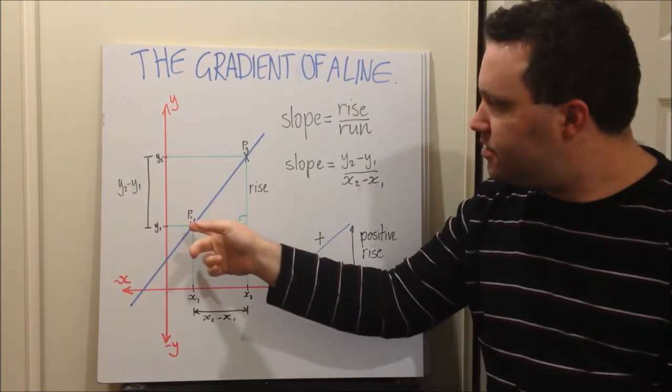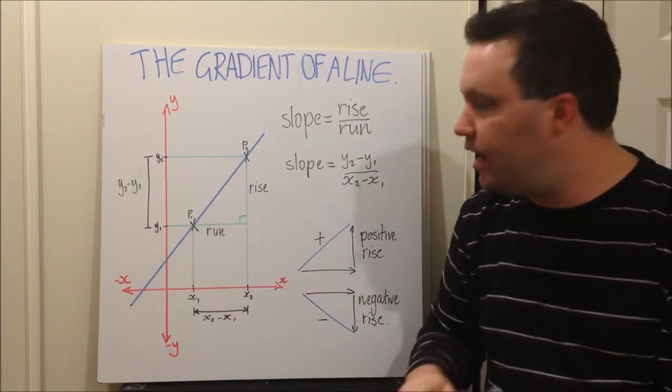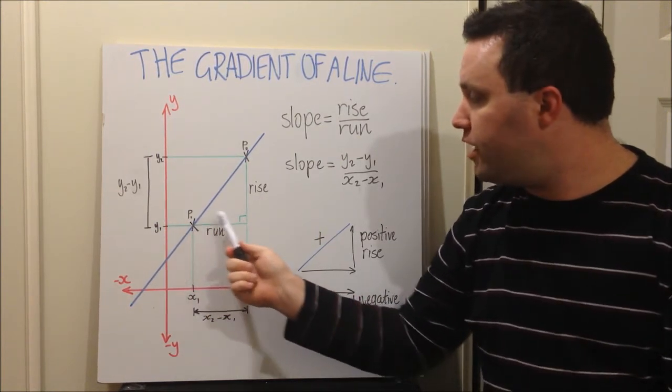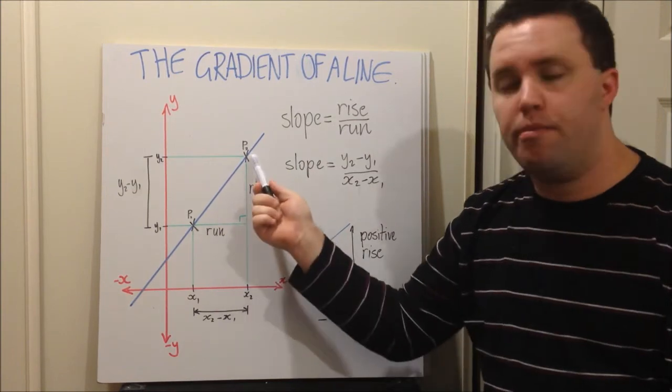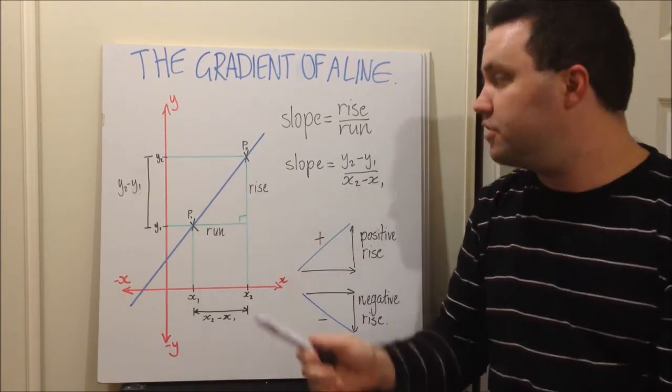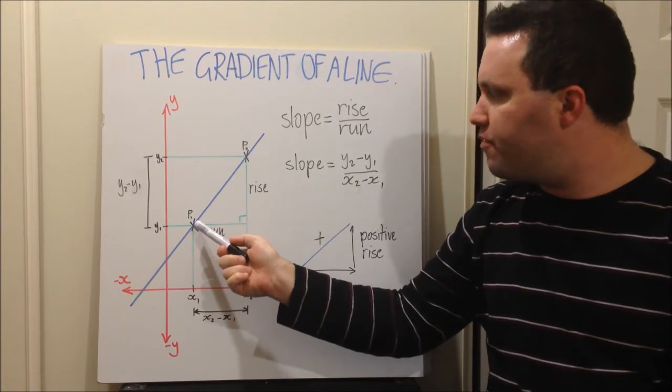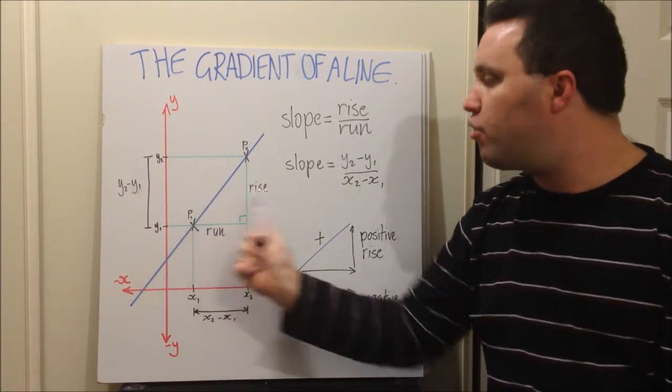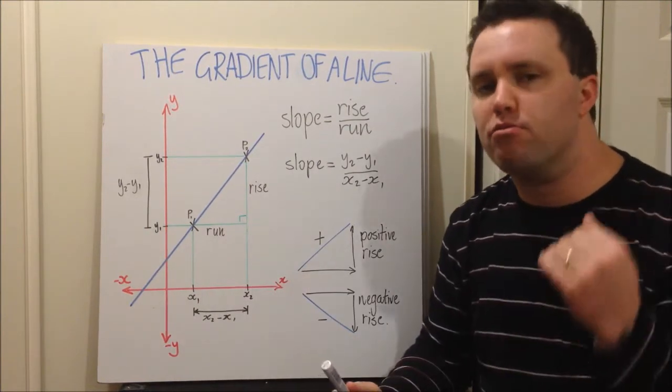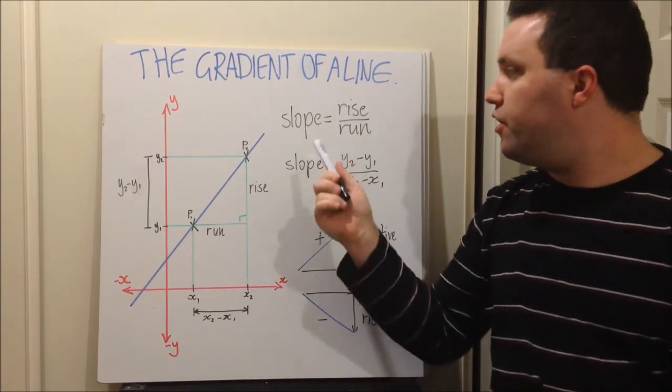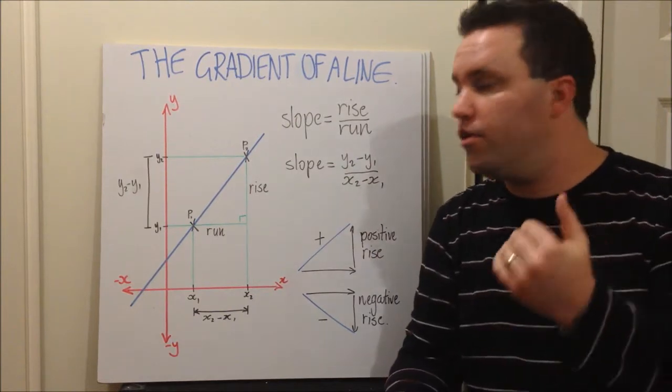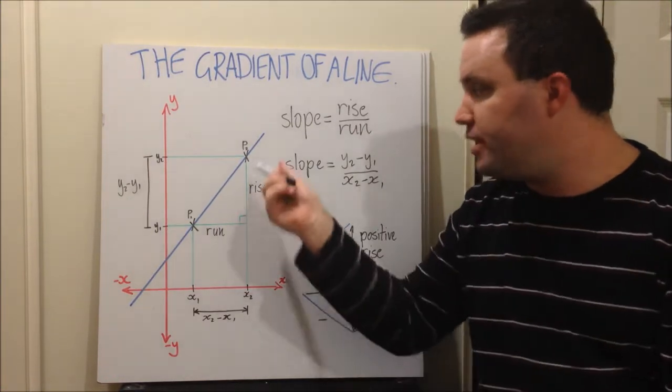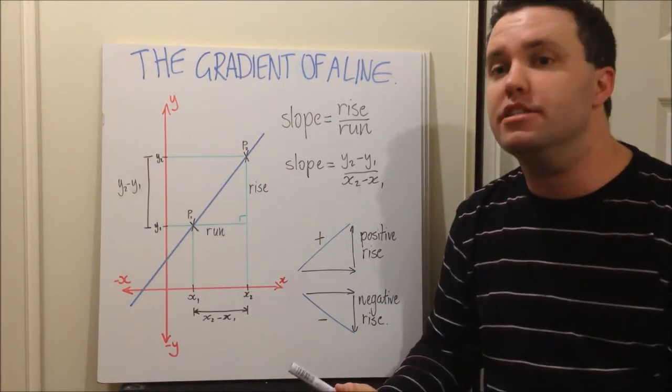What that means is if we choose any point on my line, I'm going to choose P1, that's point number one, and I am wanting to know if I choose any other point, point two, however much I go up from point one to point two, that's my rise. However much I go across from point one to point two, that is my run. Sometimes you're given your line on a graph where you can quite easily count the spaces between those points and it's quite easy to do that.